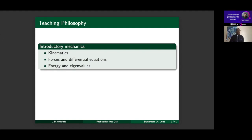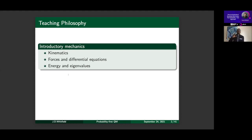The way we teach introductory mechanics is: first kinematics — how things move, constraints on treating vectors, velocity, and acceleration as functions — then vectors and differential equations, F = ma, Newton's laws. Energy and eigenvalues come in later as very complicated ideas. Shout out to Kanav — he knows my struggles with Physics 13. These concepts go one, two, three, and it's important that when we think about teaching introductory quantum mechanics we follow the same progression.